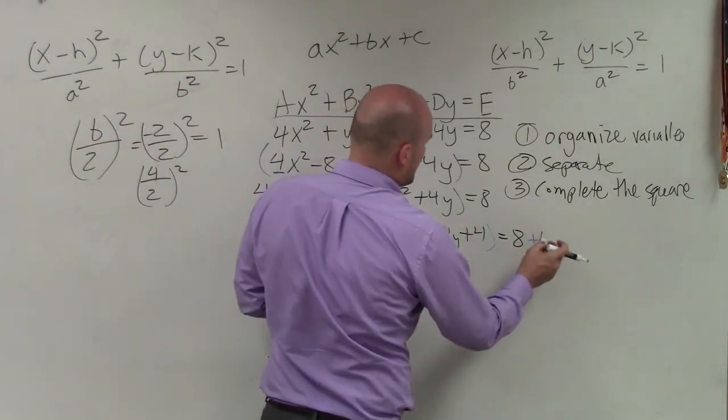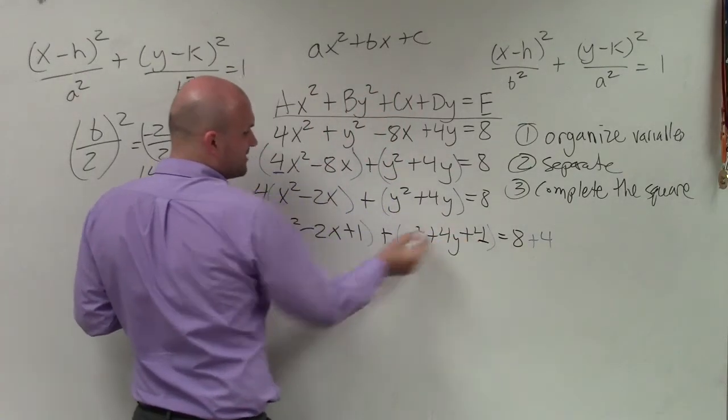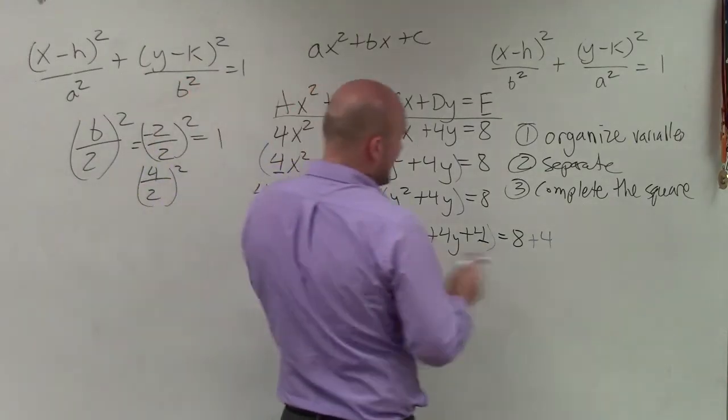So I'm going to add a 4 over here. And then I added a 4 in here, but that 4 is just being multiplied by 1. So I'm going to add another 4.